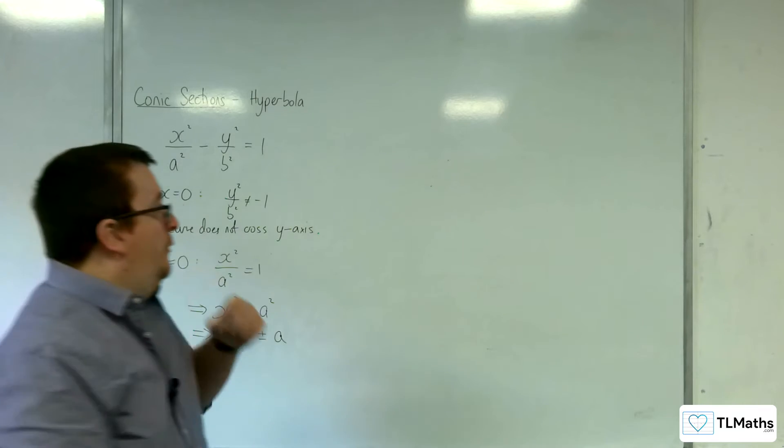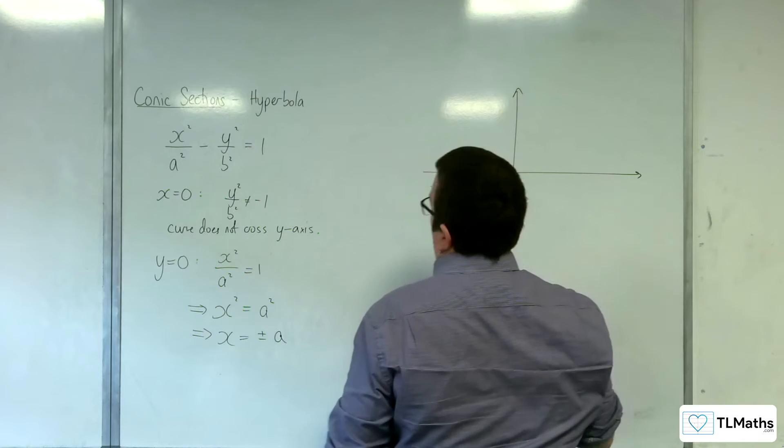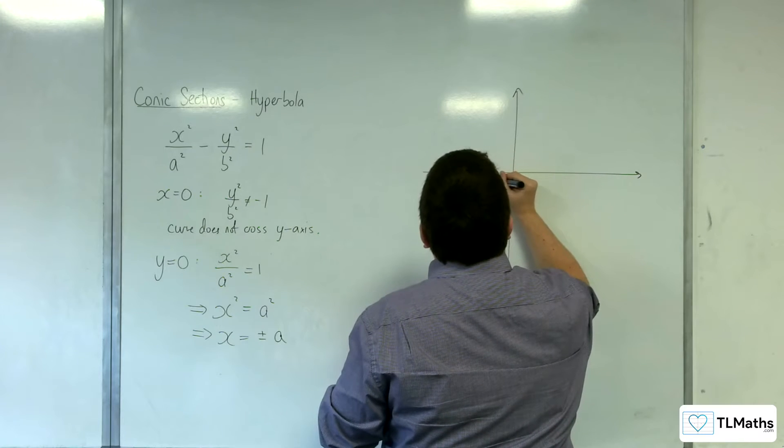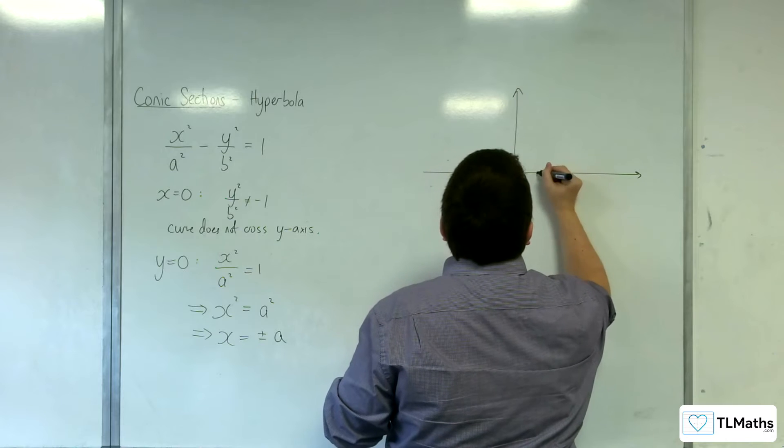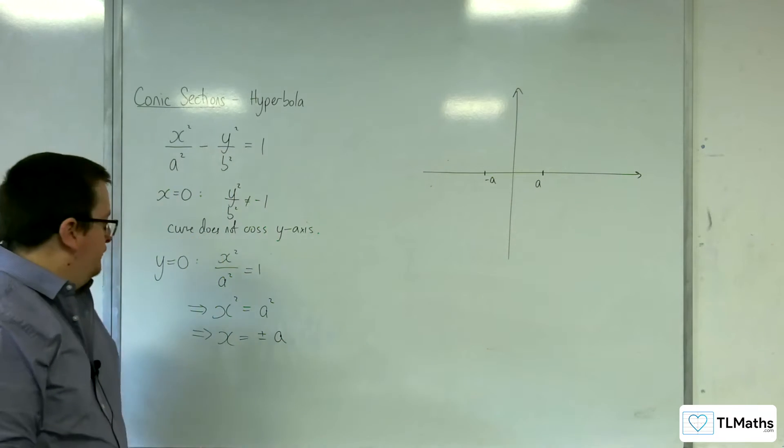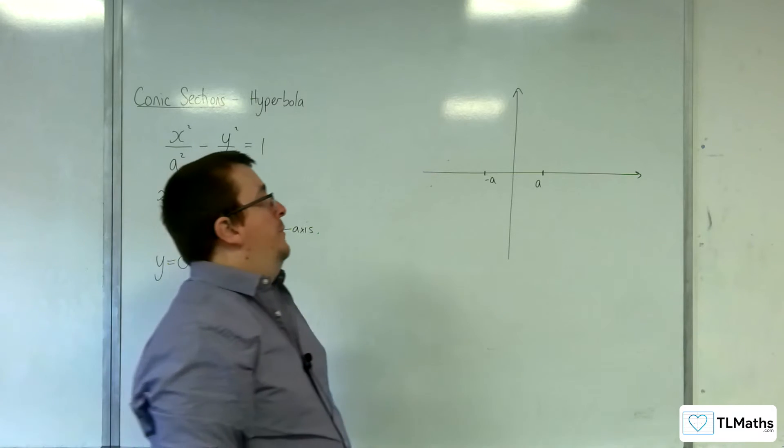So far, the graph that we have looks like this. We know that it crosses the x-axis at minus a and positive a. That's what we know so far. But it doesn't cross the y-axis.